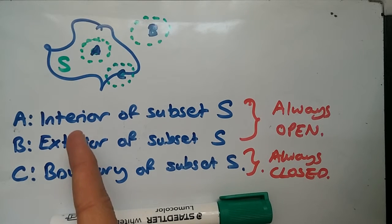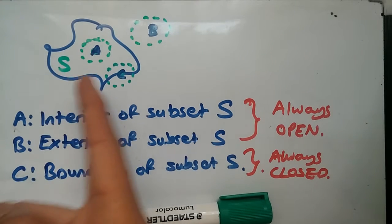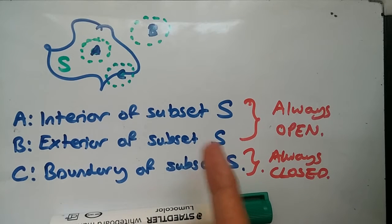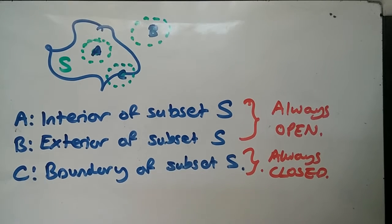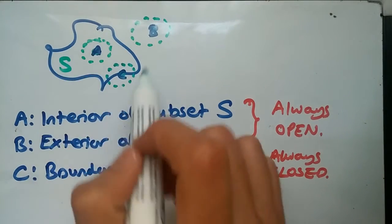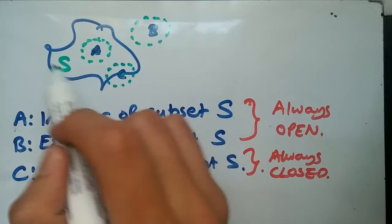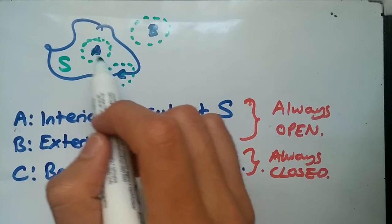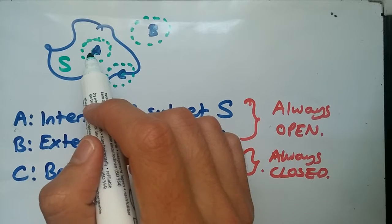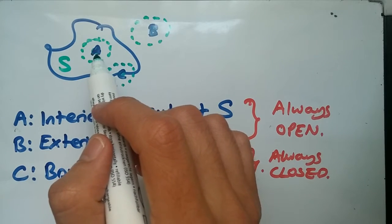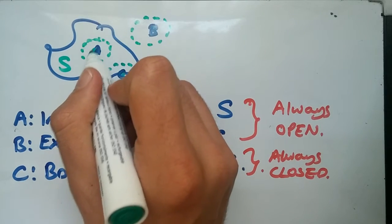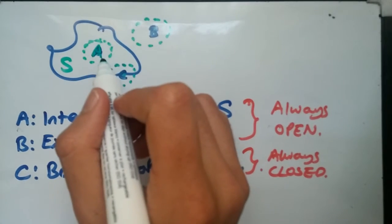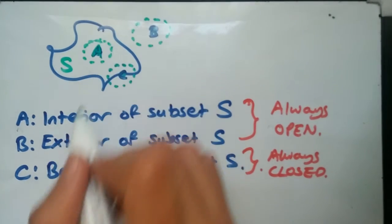We have something known as the interior of a subset S, the exterior of a subset S, and the boundary. So if you look at this diagram, what is the interior really? Well suppose we have a map S, and inside here we have something known as interior where A belongs. This is a topological space A within the subset S and we call this the interior.